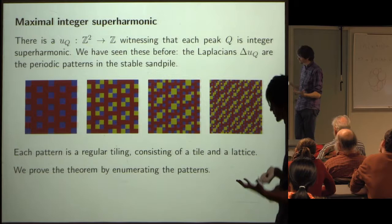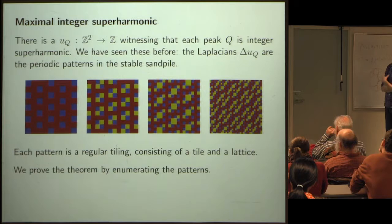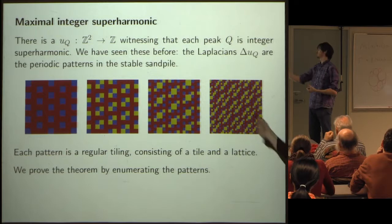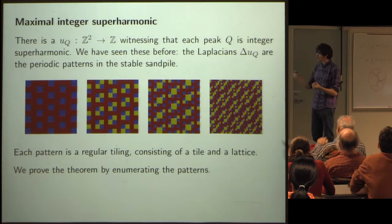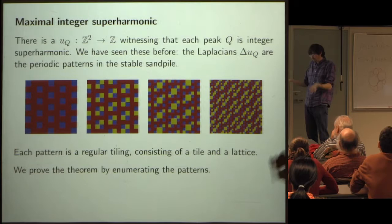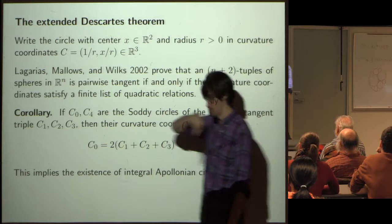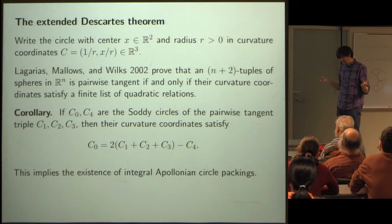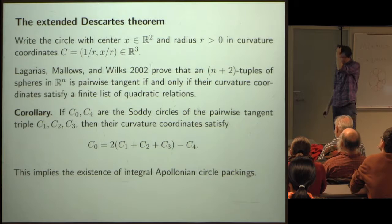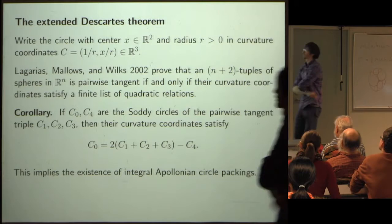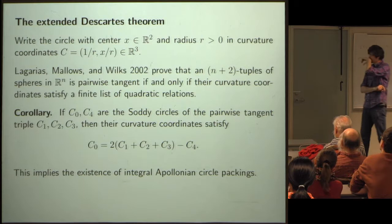How do we actually construct all of these patterns? We ran our algorithm, computed the things, knew the peaks corresponded to the patterns in the sandpile, and were stuck for a long time. The big breakthrough came from reading about Apollonian circle packings — specifically the great series of papers by Lagarias, Mallows, and Wilks, and later Graham, Lagarias, Mallows, Wilks, and Yan, on Apollonian circle packings and their number theory. The most important thing for us was just the first paper, which studies the extended Descartes theorem.